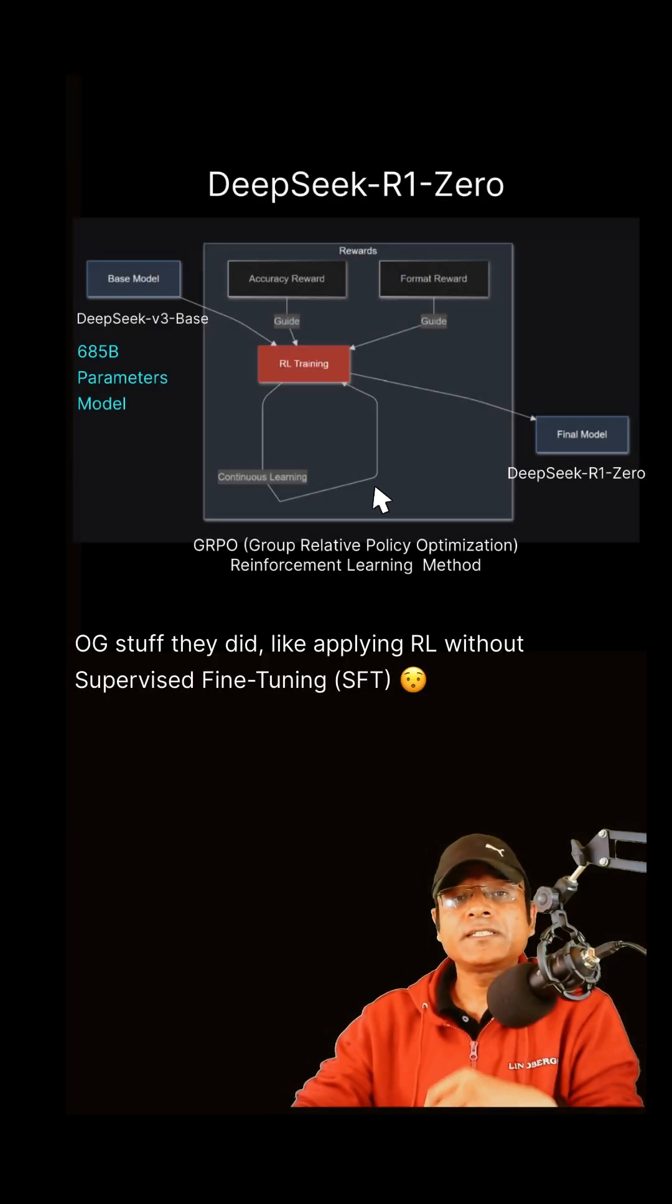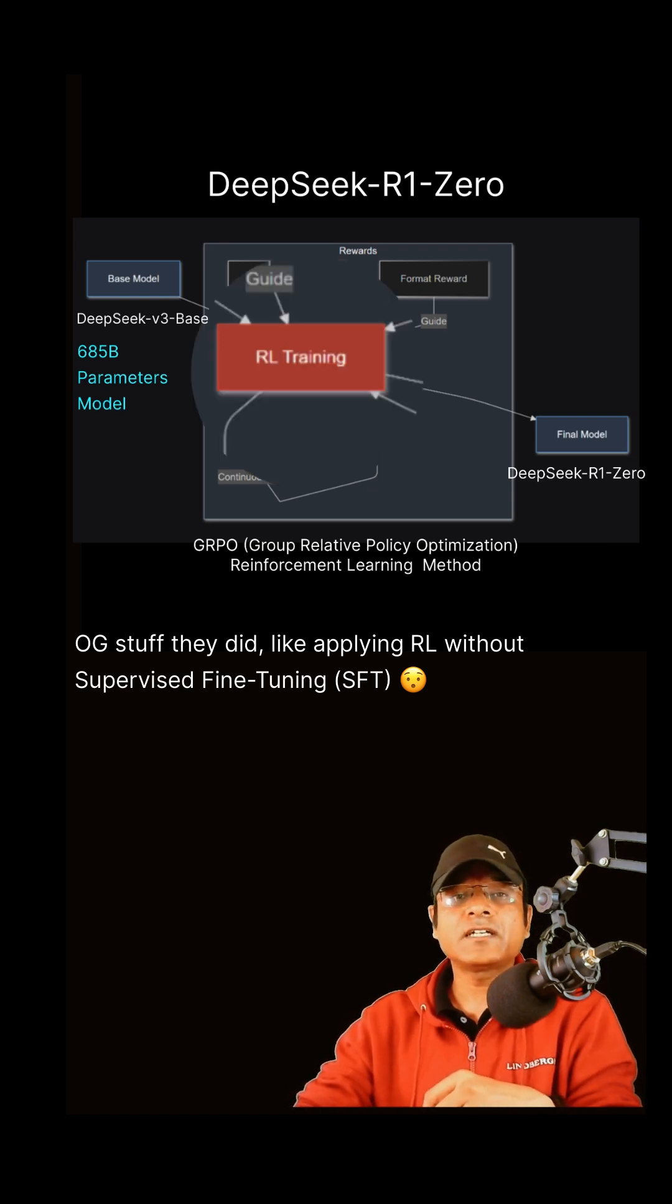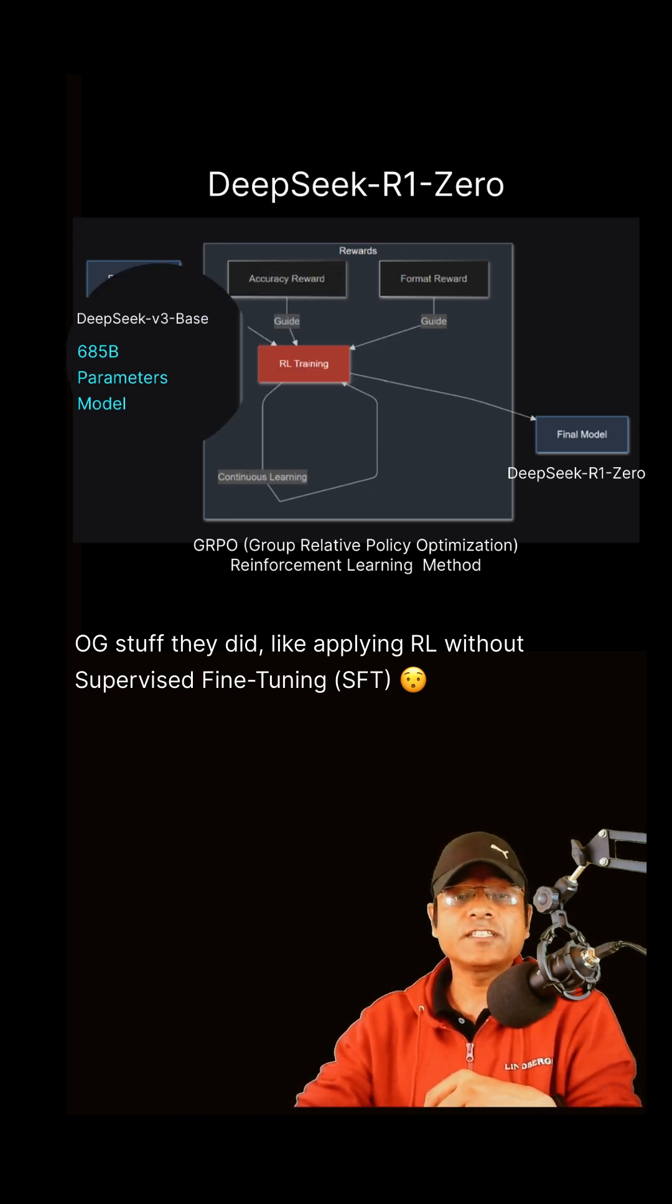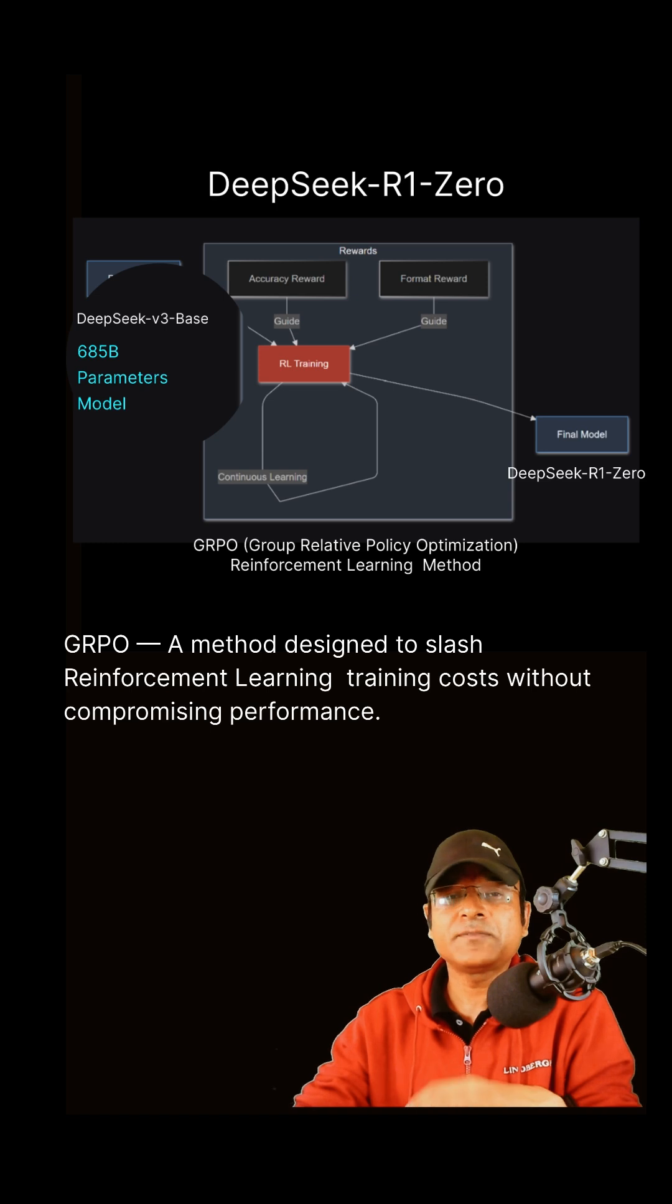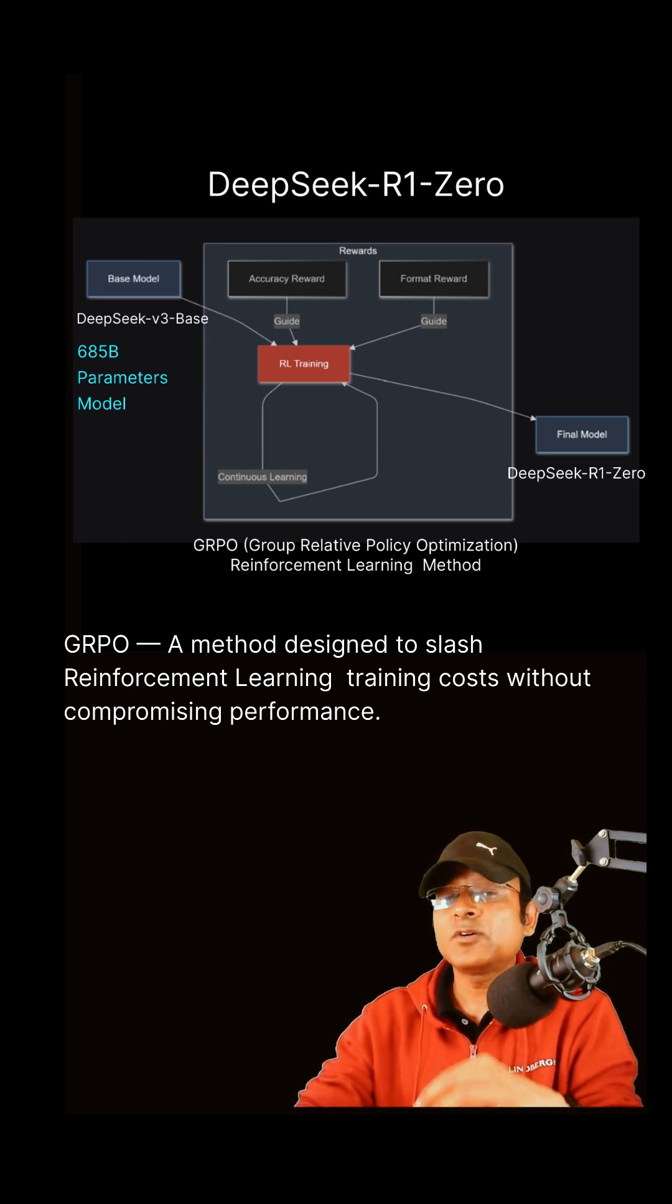According to DeepSeek's research paper, they adopted reinforcement learning with GRPO directly on the DeepSeek version 3 base model, which is a 675 billion parameter model, without supervised fine-tuning. That is one of the most important parts.